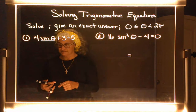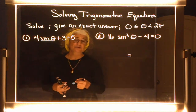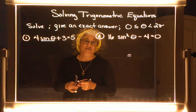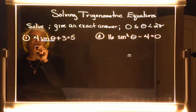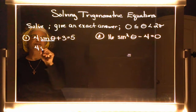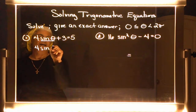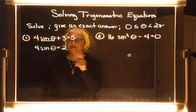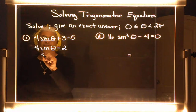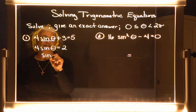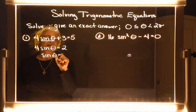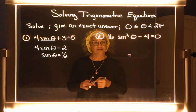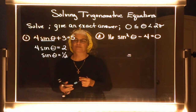First things first — what do we move first? You move the three over first. After you move the three, you divide by four. So I have the sine of theta equaling one half.